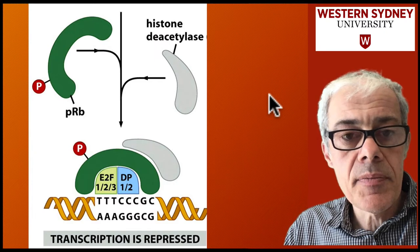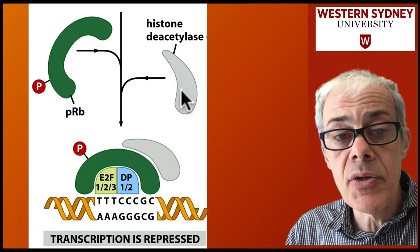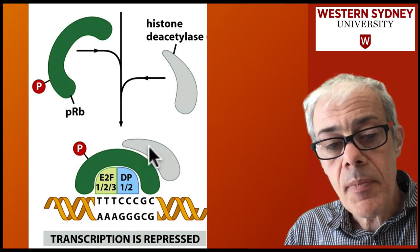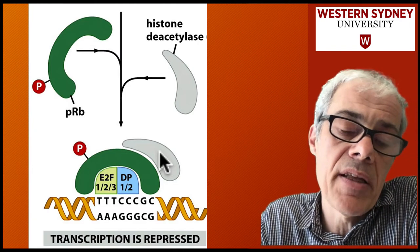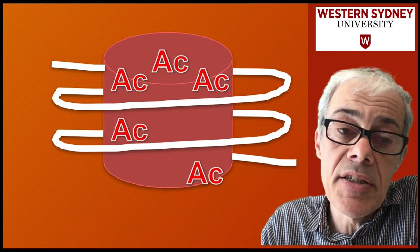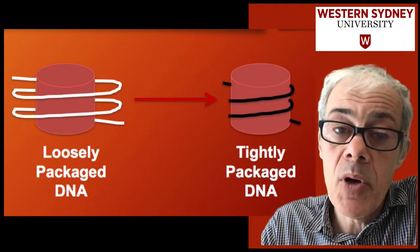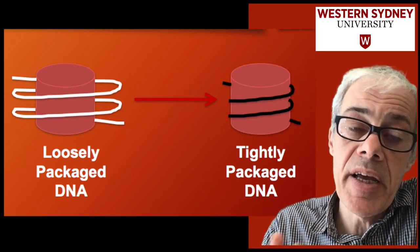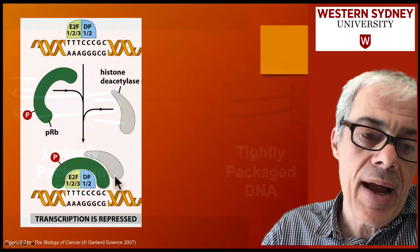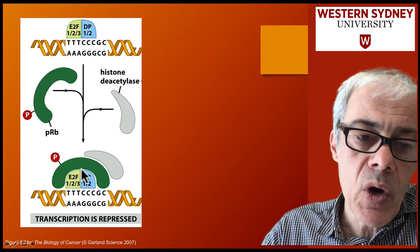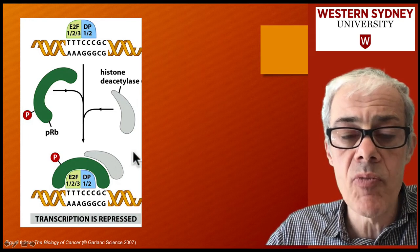Retinoblastoma can also recruit histone deacetylases. The retinoblastoma protein brings in histone deacetylases, which remove acetyl groups from lysine residues on histones. This makes the histones positively charged, so they bind tightly to DNA, making the nucleosome really compacted, and turns off transcription. So retinoblastoma not only sequesters E2F transcription factors to prevent their activity, but also recruits histone deacetylase to make nucleosomes tightly compacted.